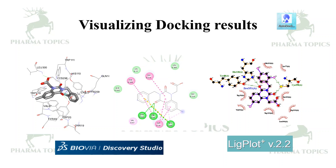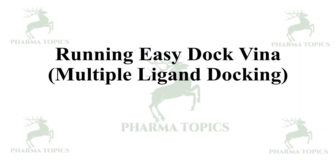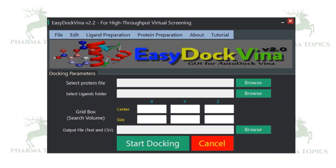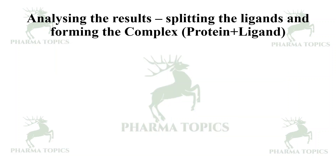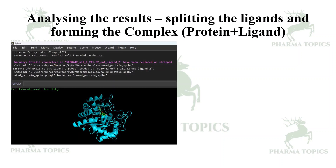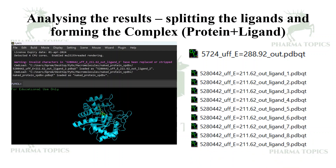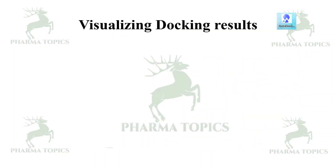Then, visualizing the results — it is the same: Biovia Discovery Studio for 2D and 3D images and LigPlot for calculating hydrogen bond lengths. Then, running EasyDock Vina — it is multiple ligand docking. The interface will appear like this. It will have a ligand preparation tab, a protein preparation tab, and docking parameters can be added here. You can give the X, Y, Z coordinates and start docking — it is very easy. Analyzing the results is very similar to Pyrex. You have to frame the complex file with PyMol, then it generates a single file for all 10 poses. Using VinaSplit.exe, you have to split the poses, and then you can visualize the results.